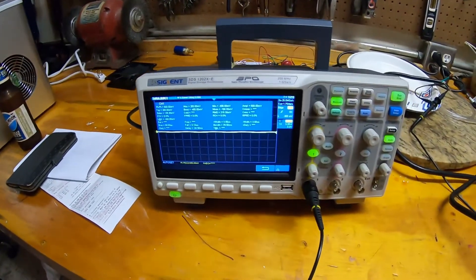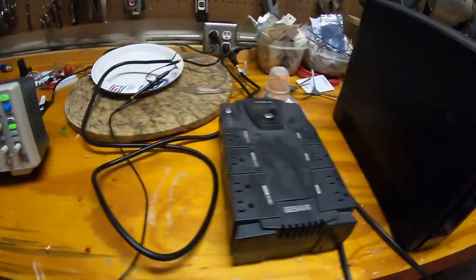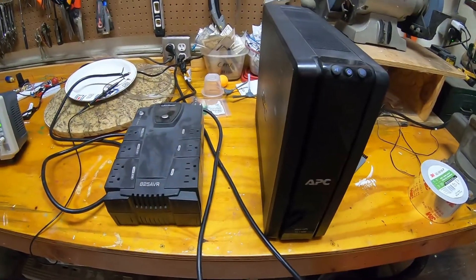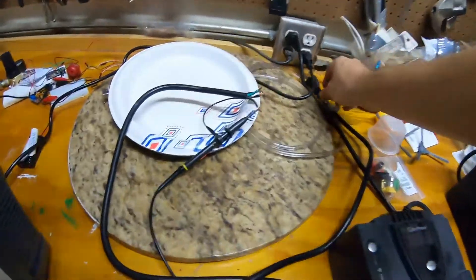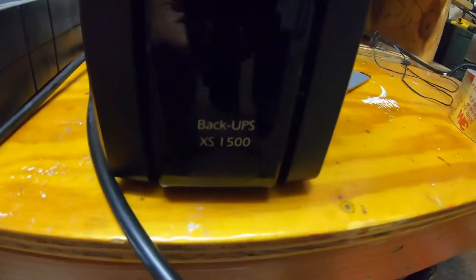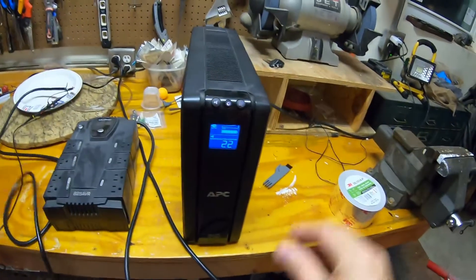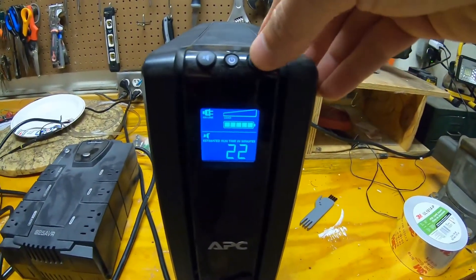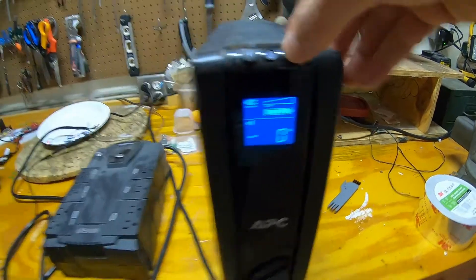Now what we're going to do is we're going to see what that same waveform looks like on each of these UPSs. Okay so first we're going to go with the APC Backups XS1500. The battery is a little old but it's fully charged. The unit is functional.